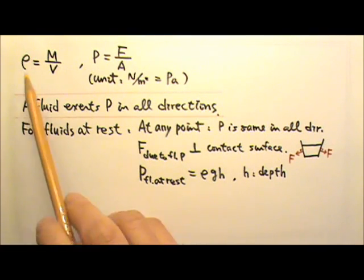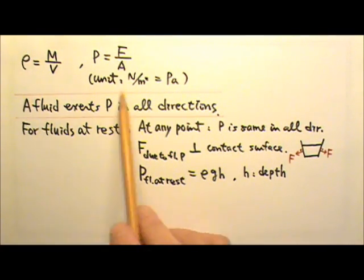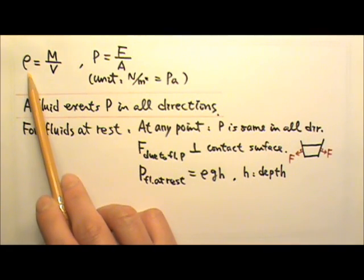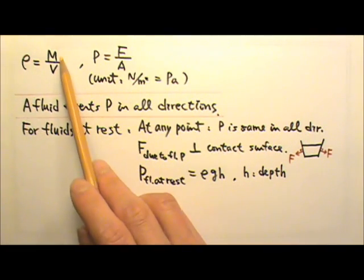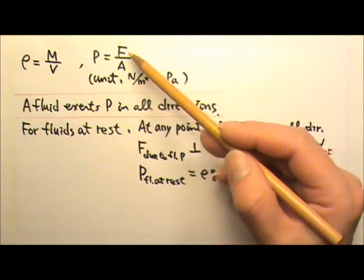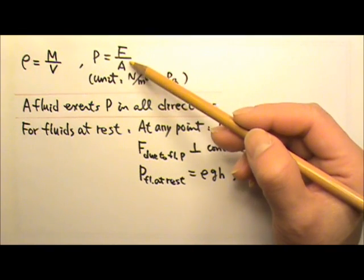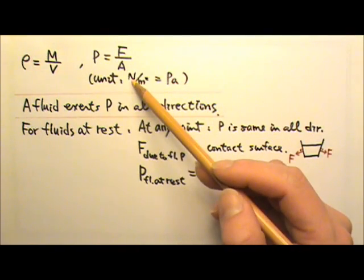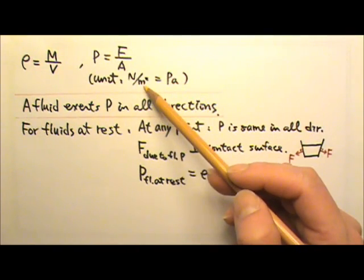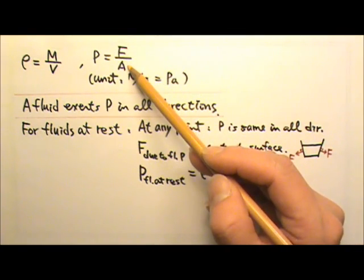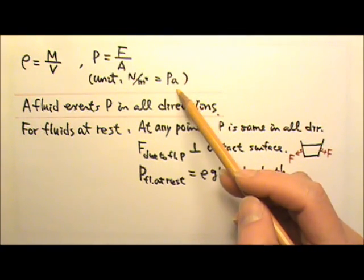In this unit, we started with some basic terms. Density is mass per volume. Pressure is defined as force per unit area, so the unit for pressure is newtons per meter squared, because it's force divided by area. The special name for this unit is pascals.